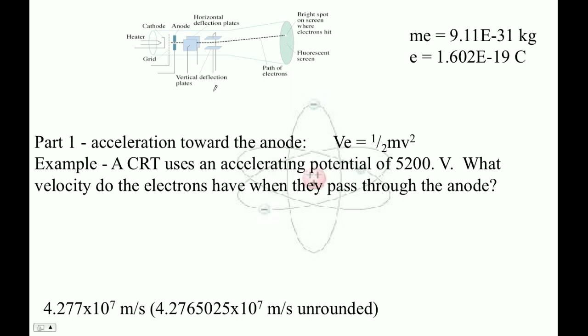Okay, in this little video, I'm just going to show you how to do the first part, and that is accelerating it from here to here. Let's suppose it has 5,200 volts that it accelerates through. What is the velocity of those electrons?